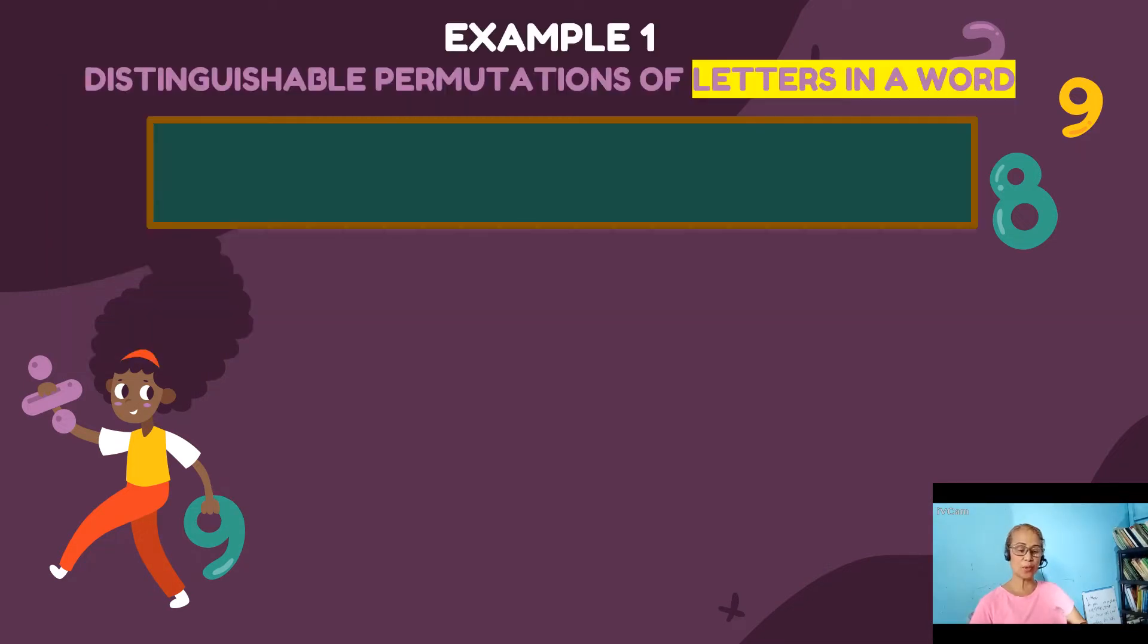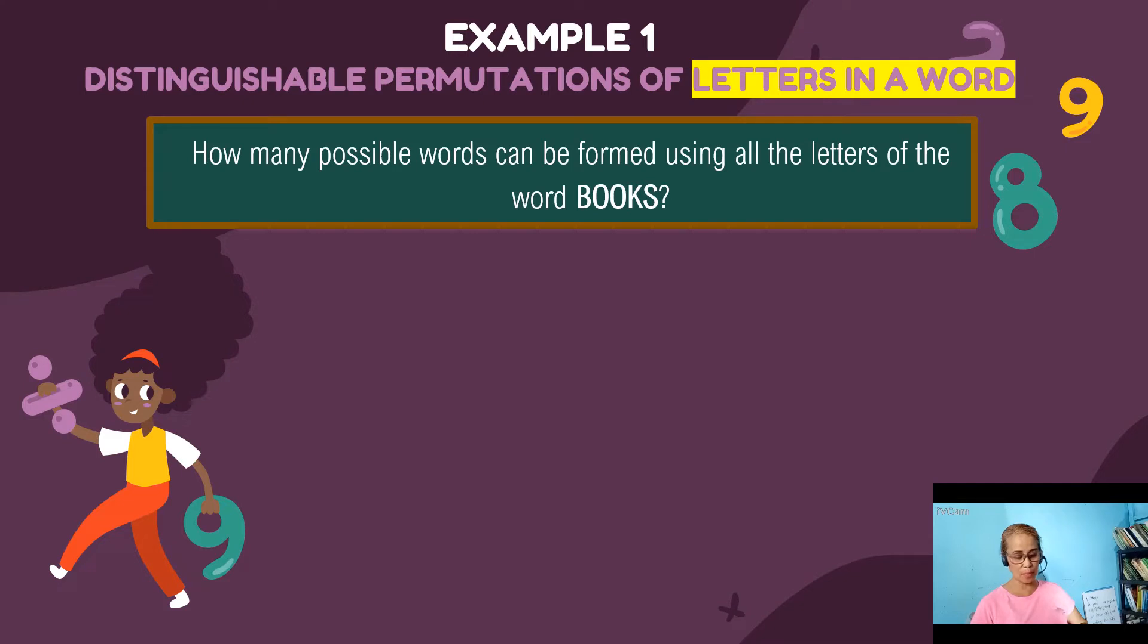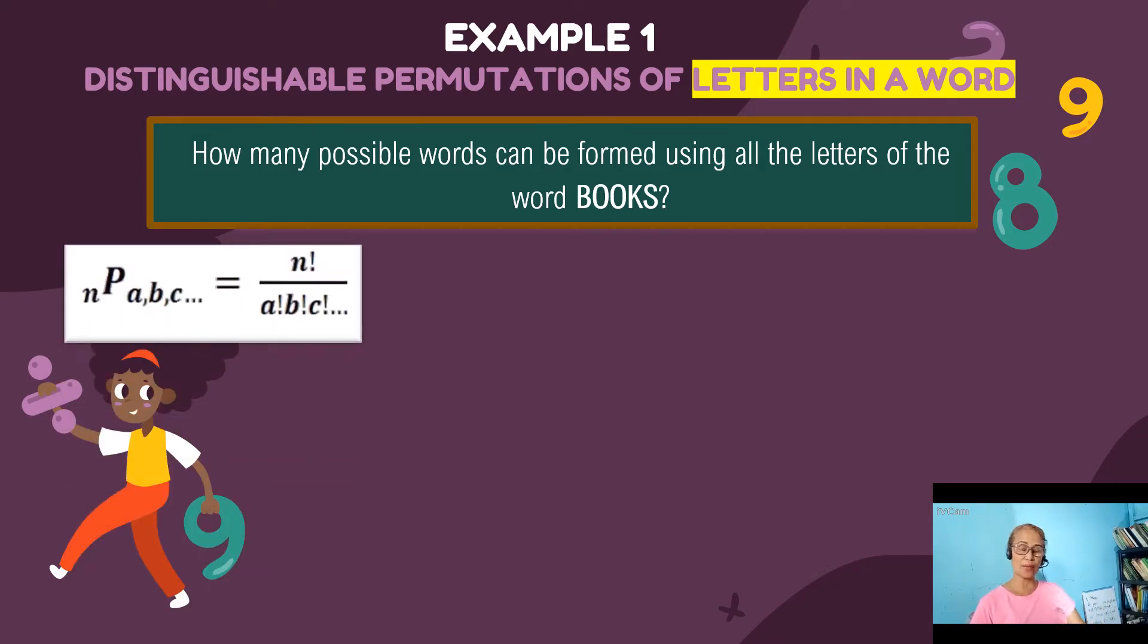So let's have example number one which is a distinguishable permutation of letters in a word. How many possible words can be formed using all the letters of the word BOOKS? So step one is we have a guide or a formula and then let's identify n or the number of objects that we are supposed to rearrange. So let's just count B-O-O-K-S. So we have five objects as our n. So n is equal to five.